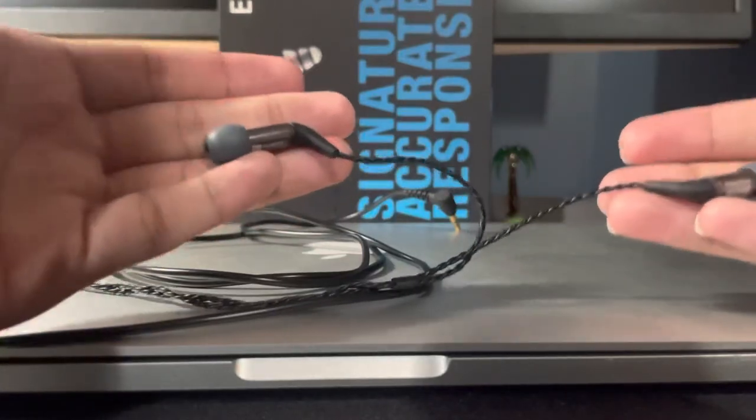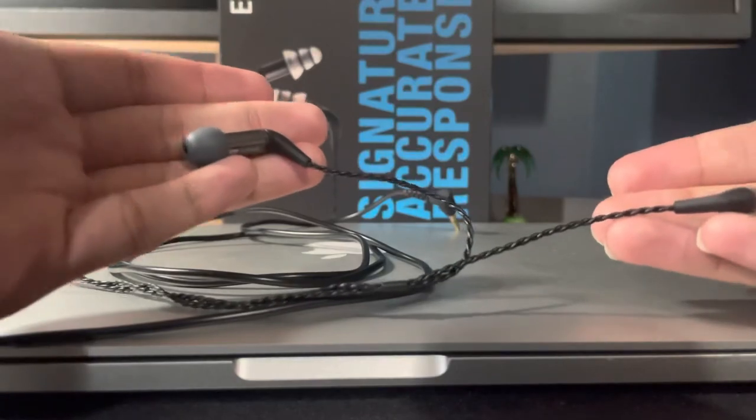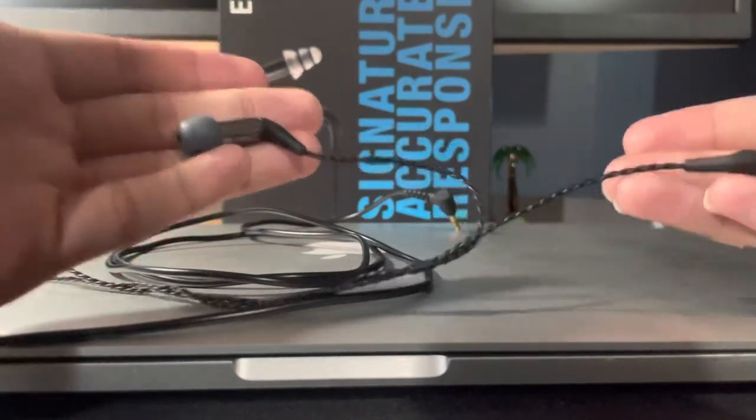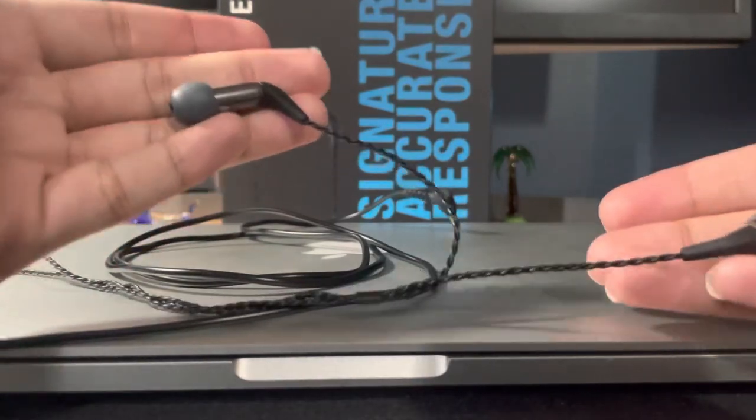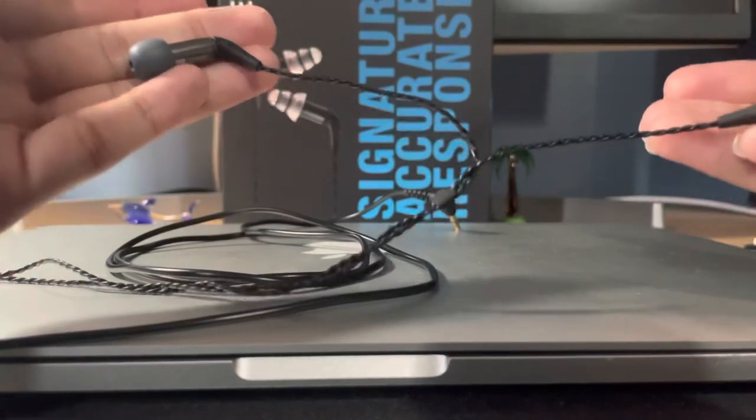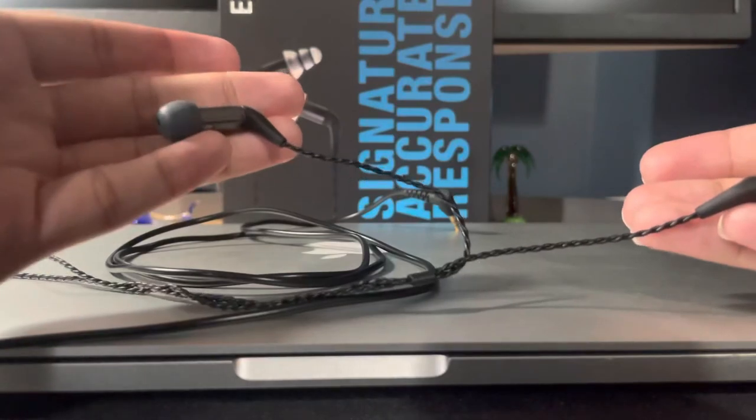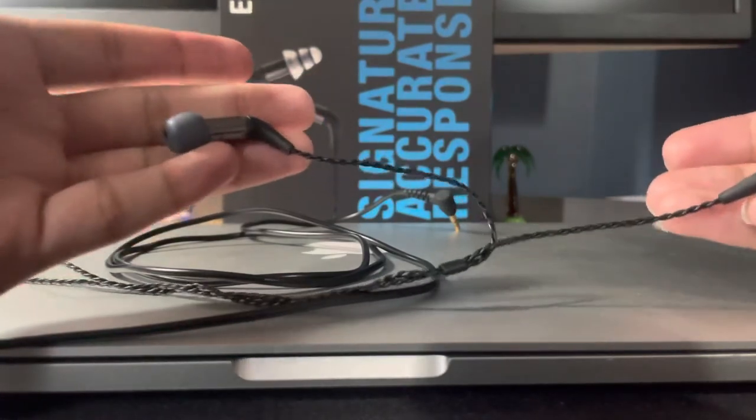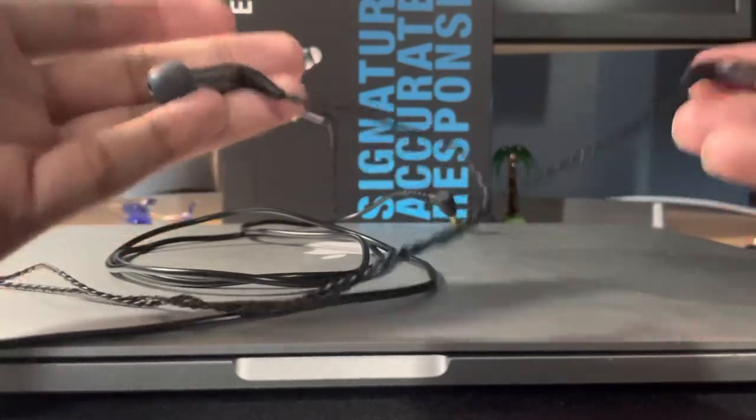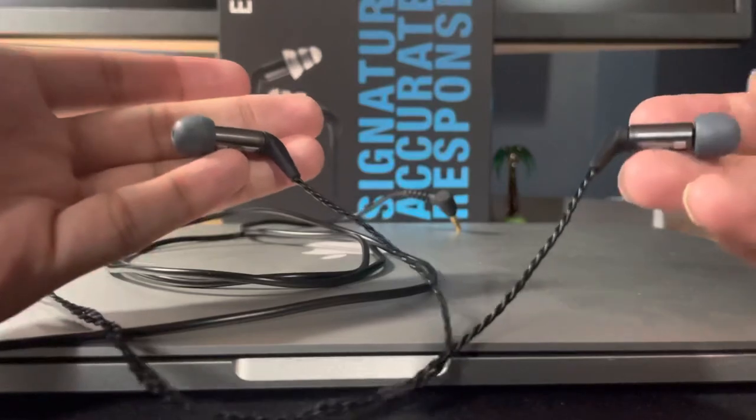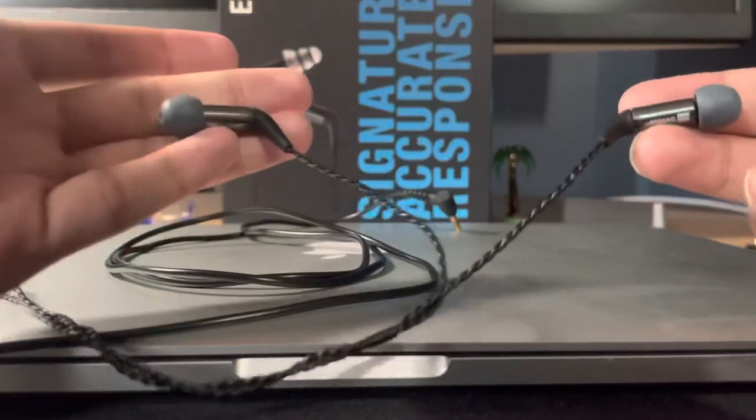These actually blow the Shure SE-425s out the water in every regard, in my opinion. Which kind of shocked me because they're about the same price if you look around. And yeah, so the mid-range is really good. Clear. No sense of any funny sounds. Like, it's not recessed or too upfront. I feel like it's perfectly where it should be. So this is definitely an audiophile grade earphone for someone who's on a budget. Like, this will blow you away compared to all the other offerings.